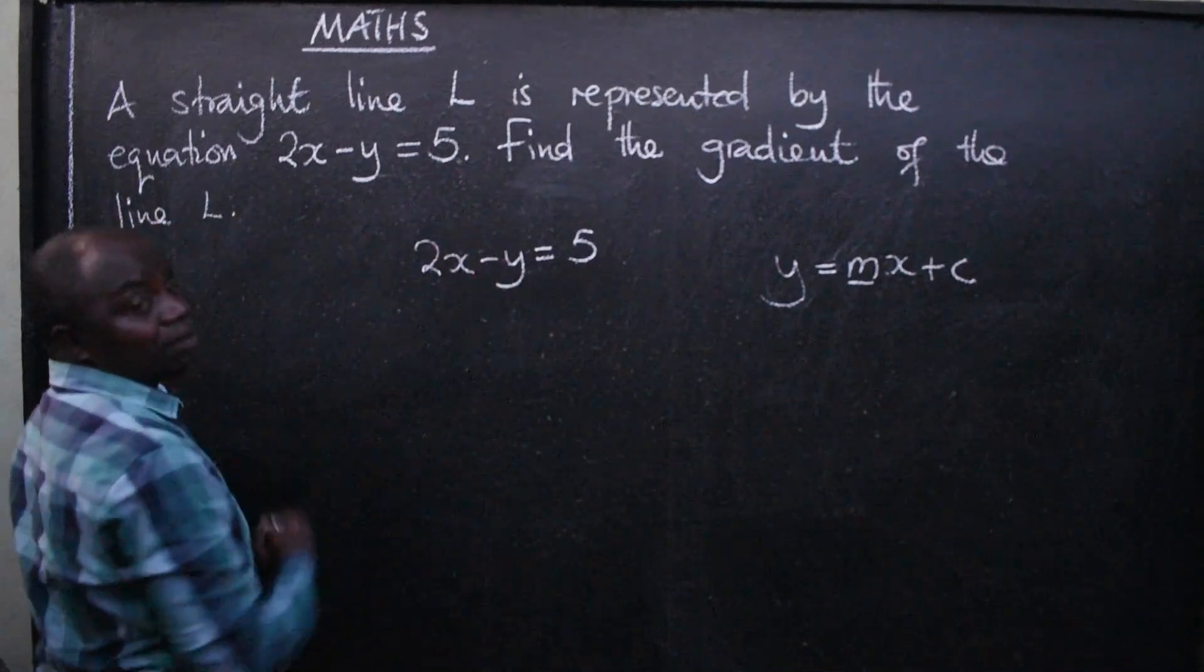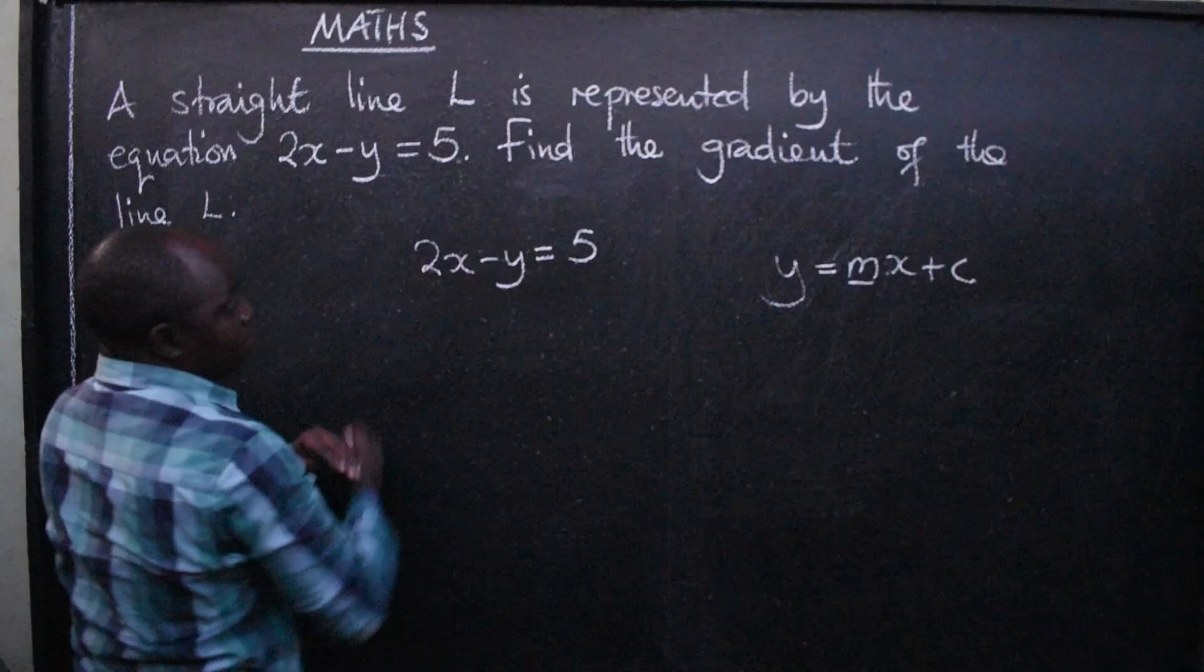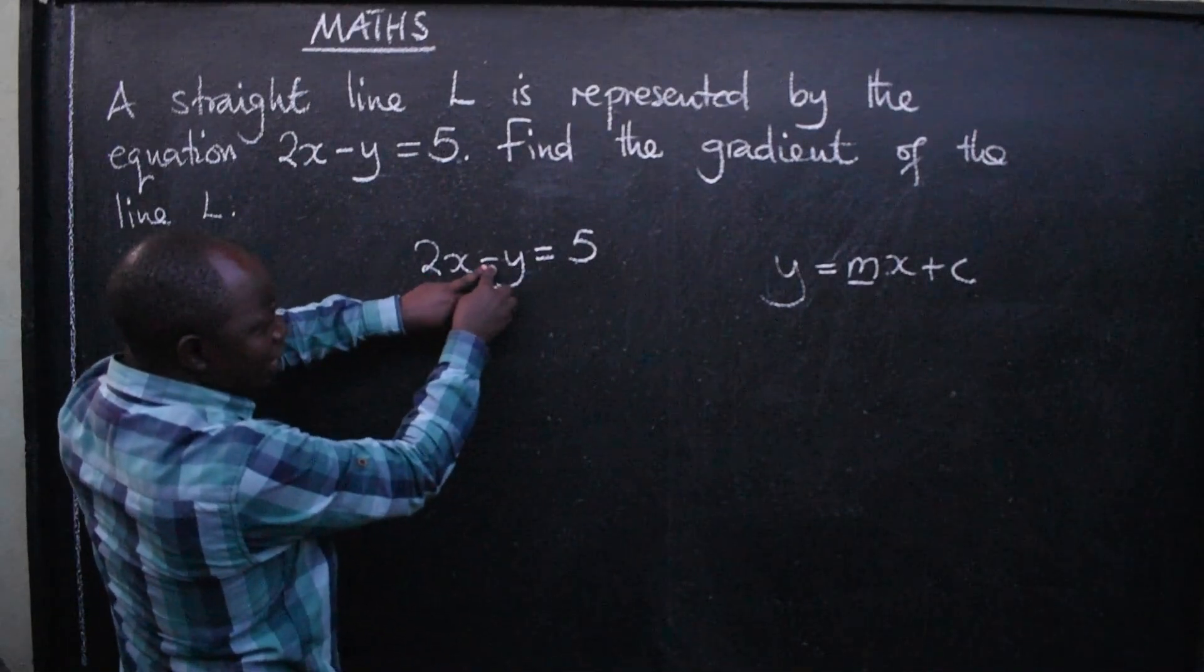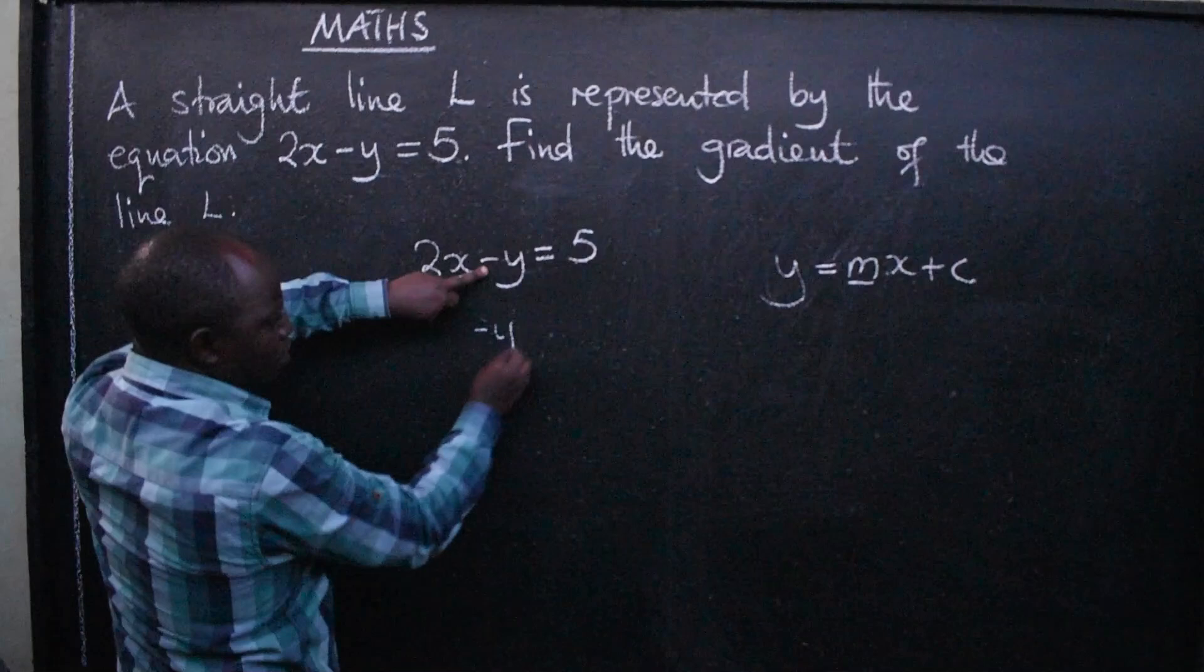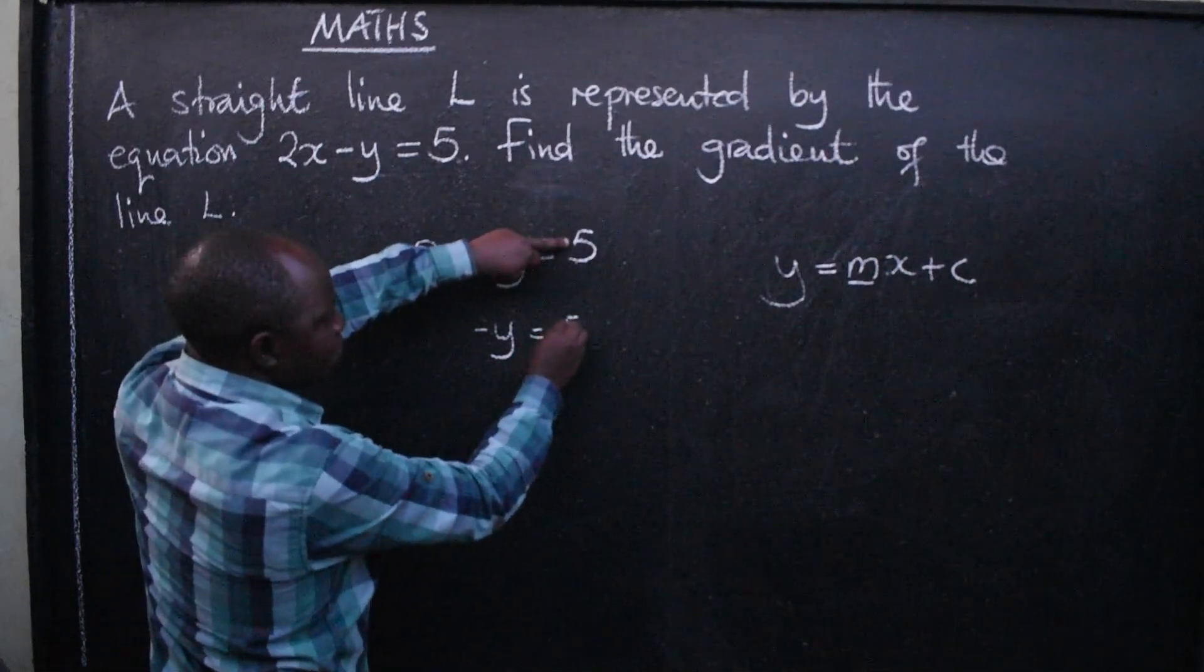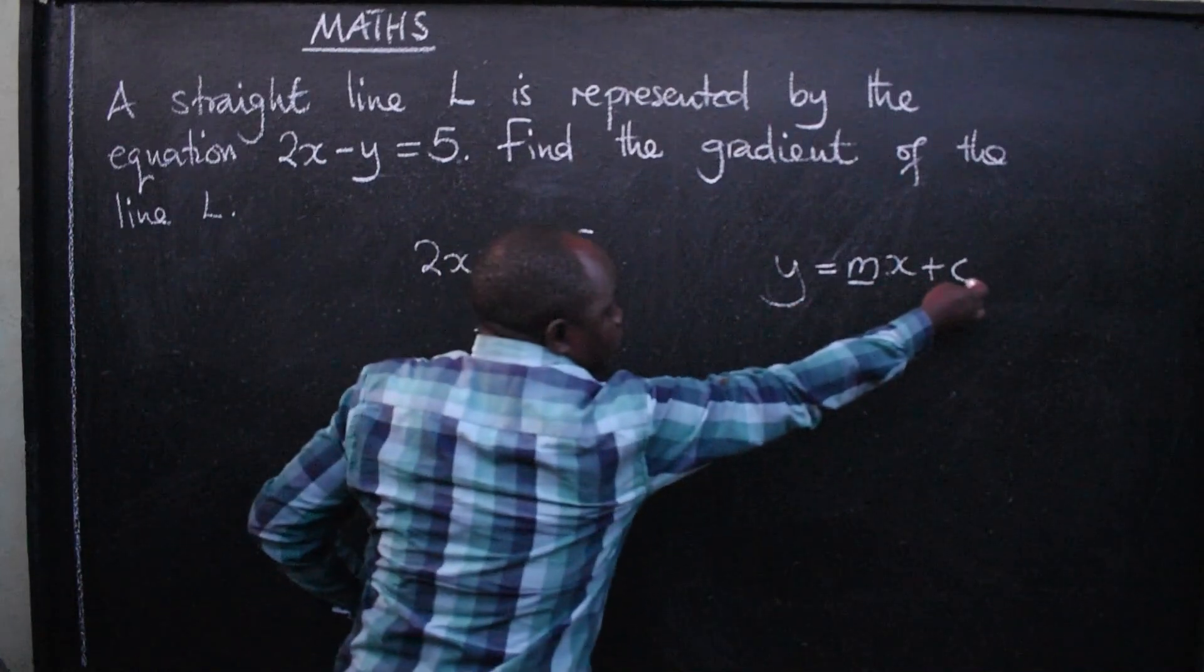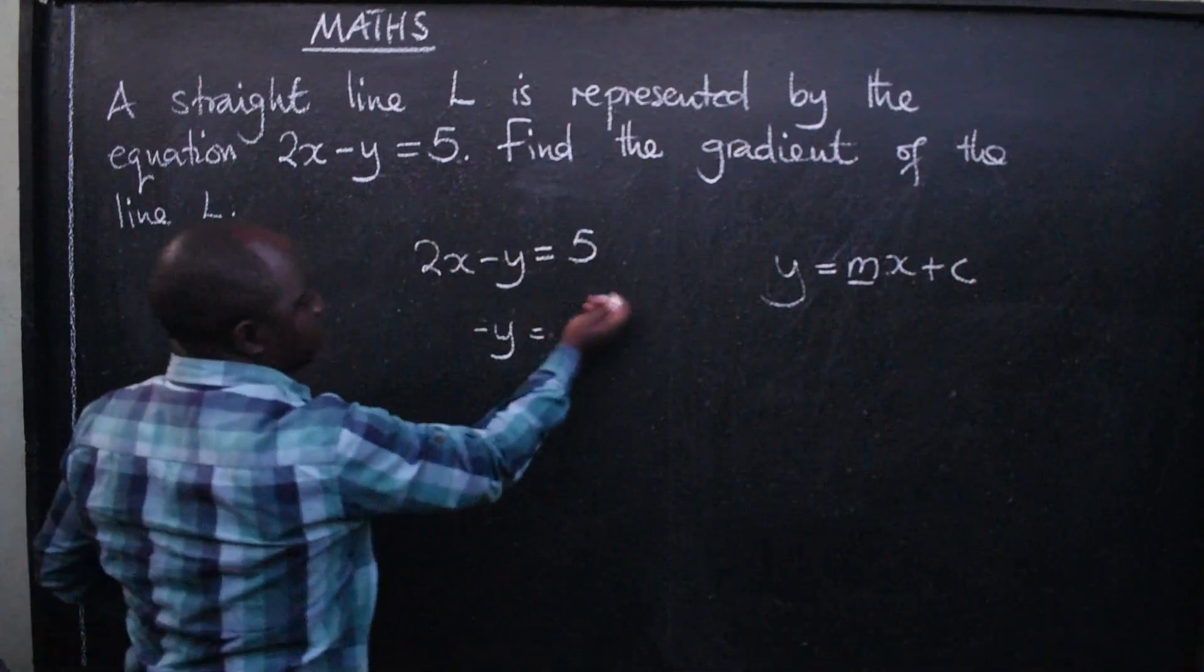So let's make y subject of the formula. On the left hand side, we want to remain with y. So we're going to say negative y, negative y equals, or before 5 because it is constant, so it should be at the end.